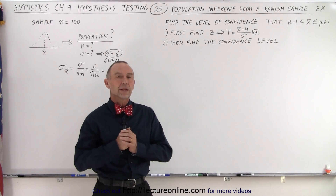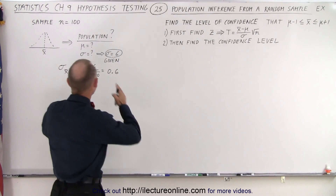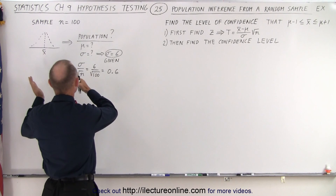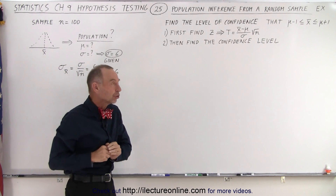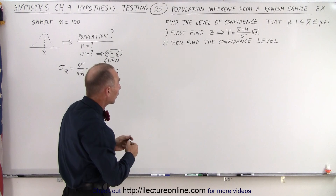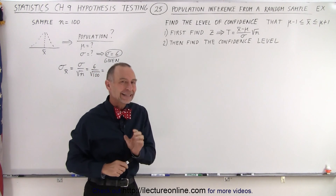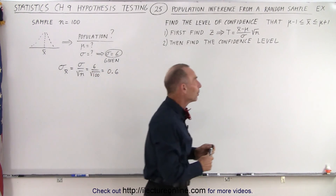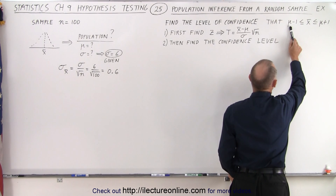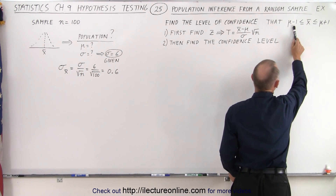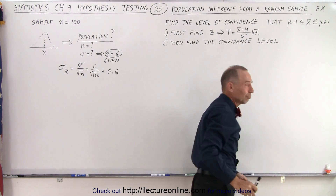Welcome to our lecture online. In this video we're going to take a sample and then infer something about the population. We're going to find the level of confidence that the mean of the sample falls between the mean of the population minus one unit and the mean of the population plus one unit.